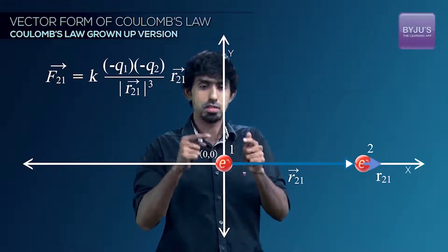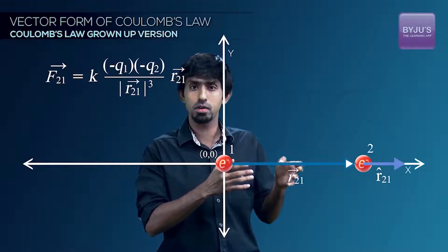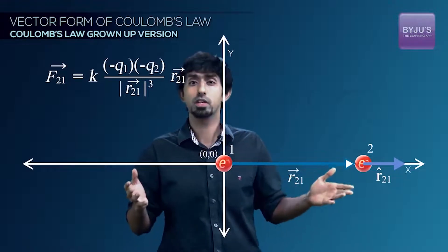Therefore, you get a vector that points in the direction of R21 vector itself, which is what we predict because if both are negative, it's going to be a repulsion again.